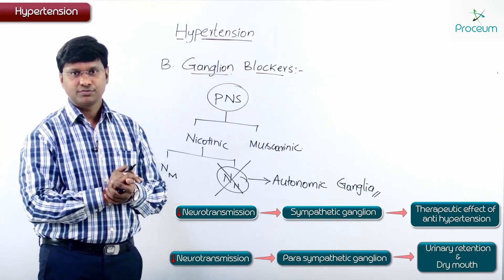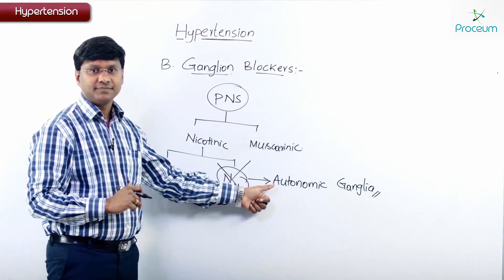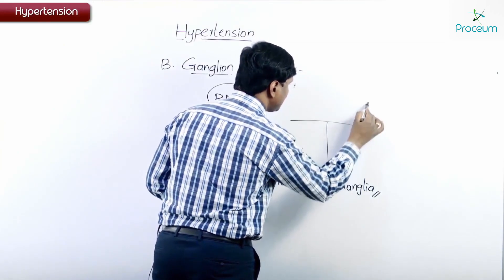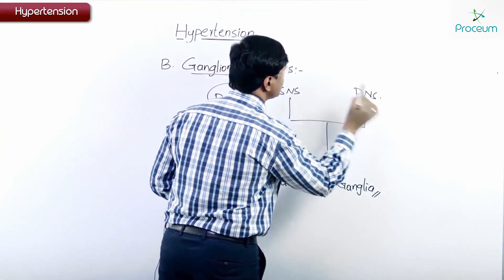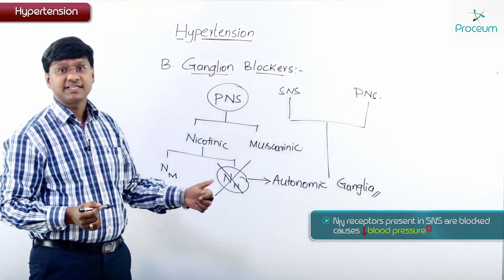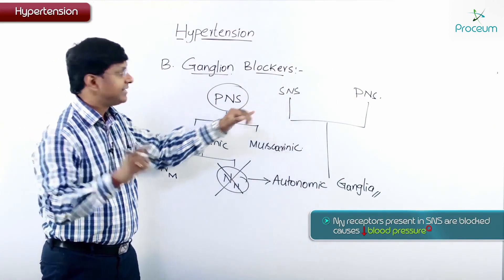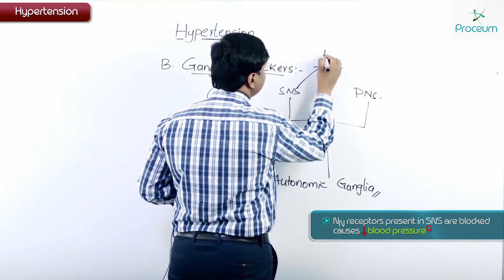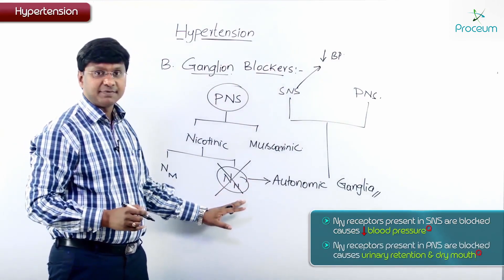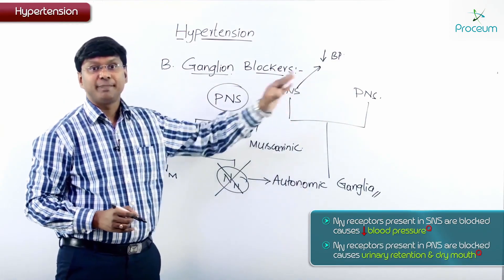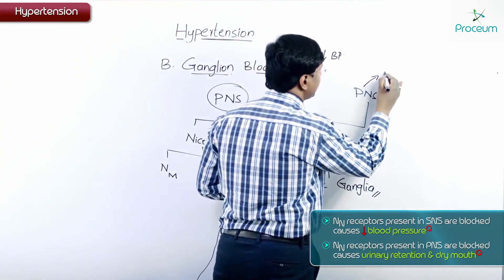NN receptors present in the autonomic ganglia exist in both the sympathetic and parasympathetic nervous systems. If NN receptors in the sympathetic autonomic ganglia are blocked, there will be a decrease in blood pressure. Whereas if the NN receptors in the parasympathetic autonomic ganglia are blocked, that will result in dry mouth and urinary retention.